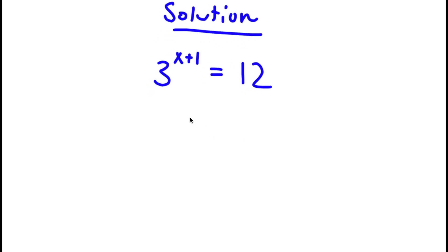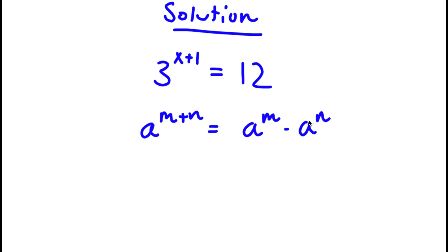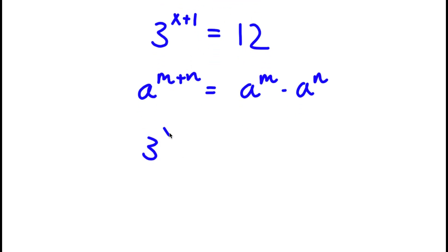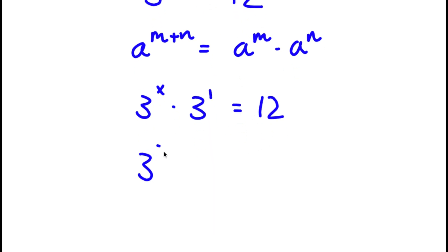Using the property that a to the power of m plus n equals a to the power of m times a to the power of n, I can rewrite 3 to the power of x plus 1 as 3 to the power of x times 3 to the power of 1, and this is equal to 12. Now, 12 we can also rewrite as 3 times 4. So now I have 3 to the power of x times 3 to the power of 1 equal to 3 times 4.